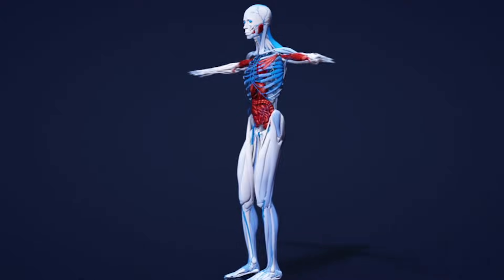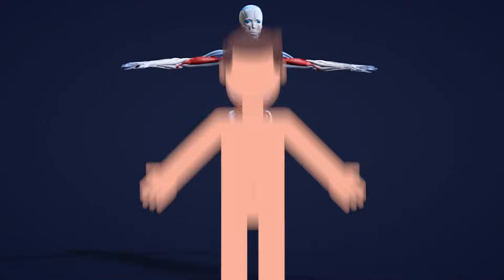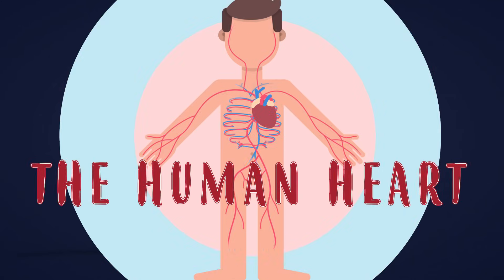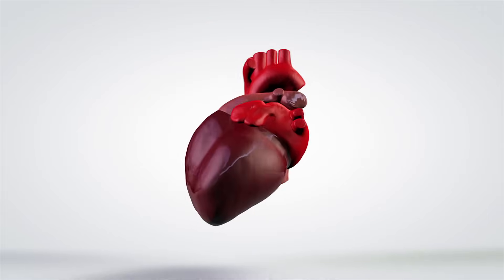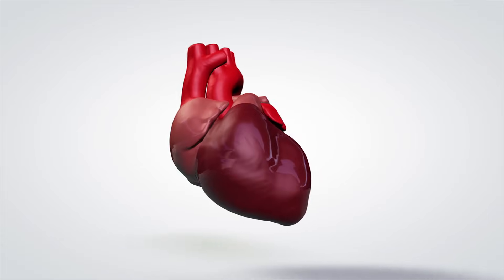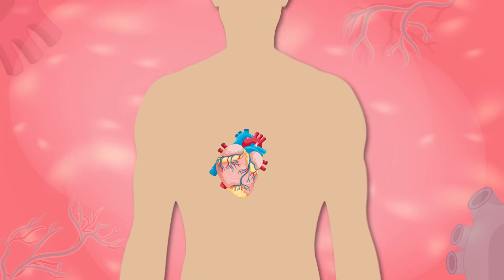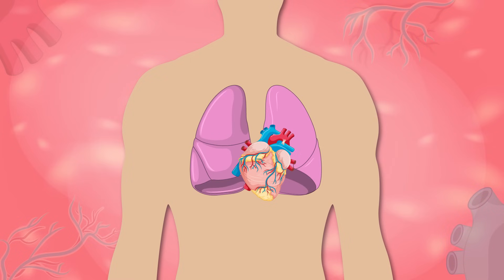We're going to get to know the human heart. The heart is the most special muscle we have. It's situated a little to the left from the center of our chest, between our lungs, and is in an oblique position, positioned diagonally.